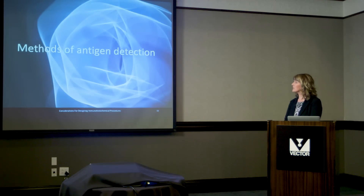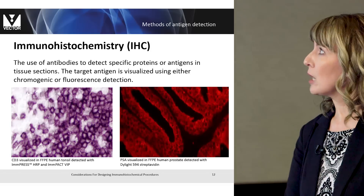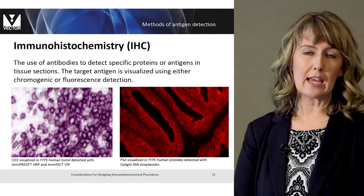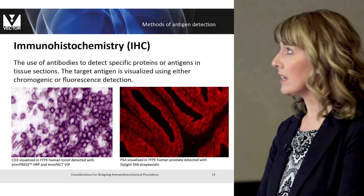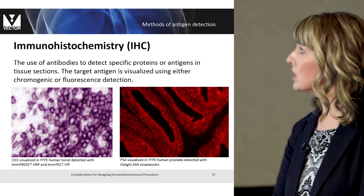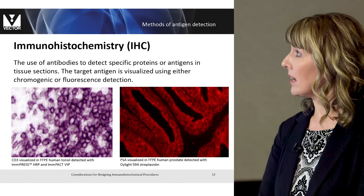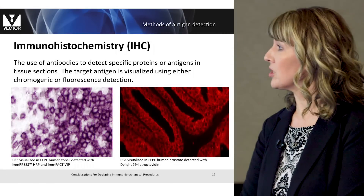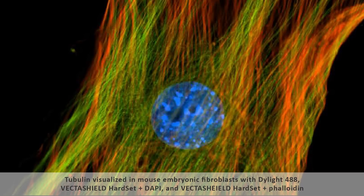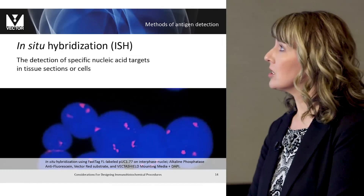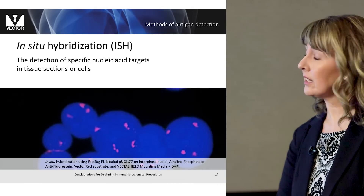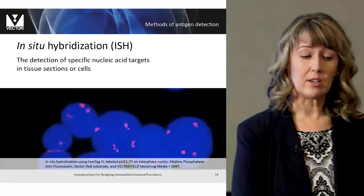The first thing we're going to discuss is your method of antigen detection. Immunohistochemistry is defined as using antibodies to detect target antigens or proteins in your tissue section, and this antigen can either be visualized using enzymatic detection or fluorescence detection. Immunocytochemistry is the detection of specific proteins or antigens in cell preparations. In situ hybridization is the detection of specific nucleic acid targets in tissue sections or cells.